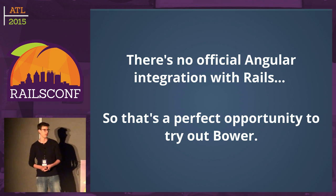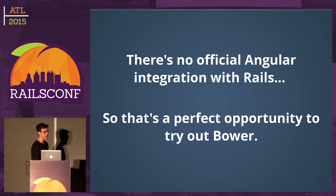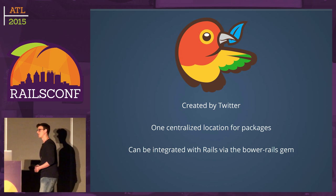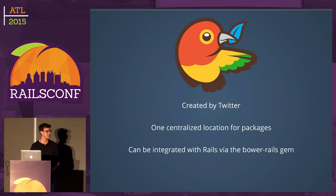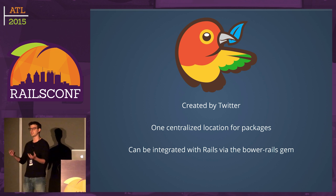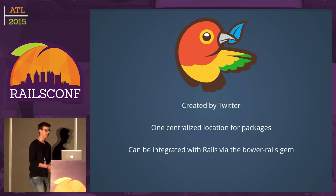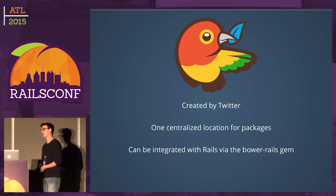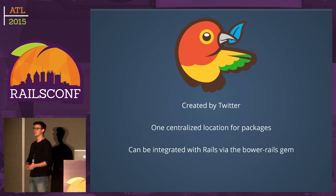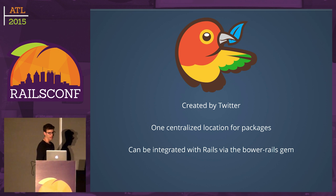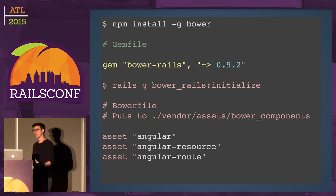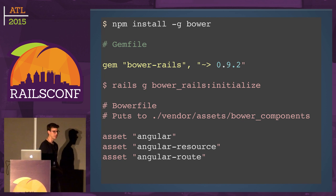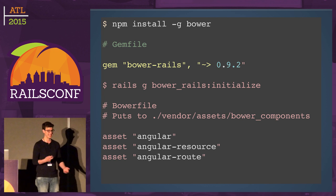Since Angular doesn't have an official Rails implementation, we'll use Bower. There are several ways to include JavaScript frameworks in Rails: a CDN, copying into vendor assets, or gemified versions. Bower makes it easy to include pretty much any JavaScript library — it's one centralized location for thousands of packages. It integrates really nicely via the bower-rails gem. You npm install Bower, set it up in your Gemfile, initialize it, and then you have a Bower file similar to a Gemfile where you bring in Angular.